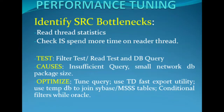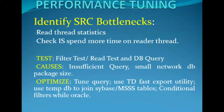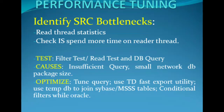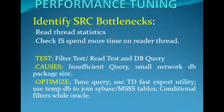For the DB query test, take the query from the source qualifier and run it directly in the database. If the query runs faster in the database than in the session, that means there is a source bottleneck. The main causes of a source bottleneck are insufficient or poorly tuned queries and small network DB packet size.